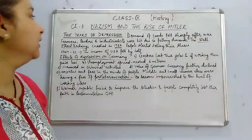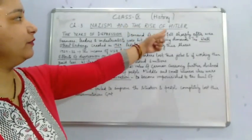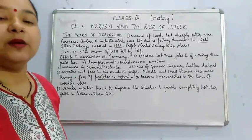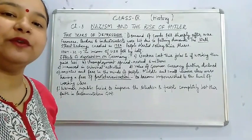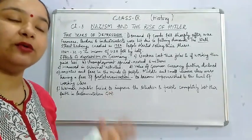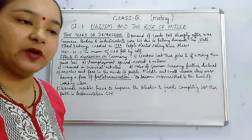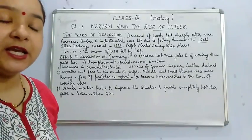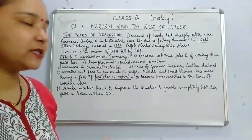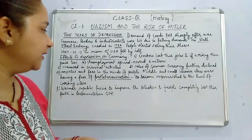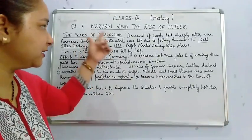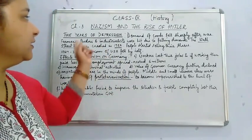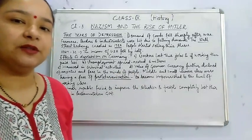Hello everyone and welcome to my class. We continue with the third chapter — Nazism and the Rise of Hitler — of class 9th history. Today I will be discussing the years of depression. In my previous video I discussed the effects of the First World War on Germany, and we saw how the political condition in Germany was becoming very unstable and people were not satisfied. We will be discussing the period from 1929 to 1932 in great detail when we discuss the Great Depression. So let's start the topic: the years of depression.